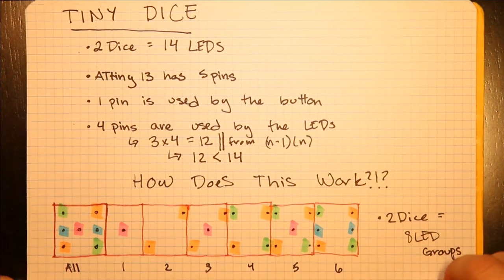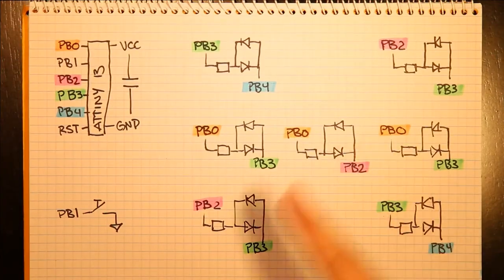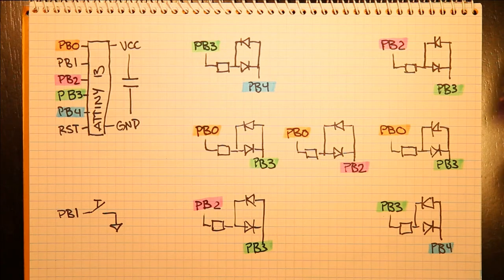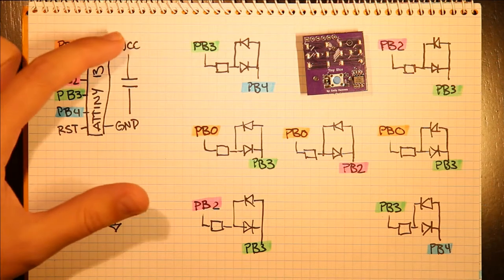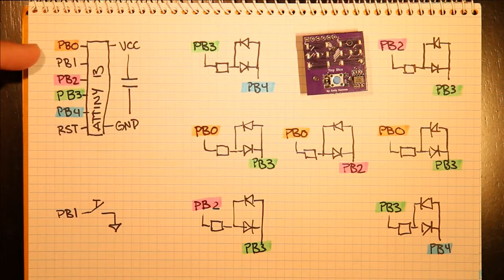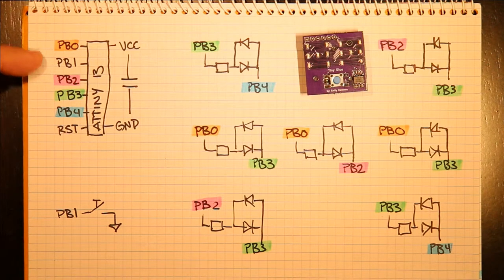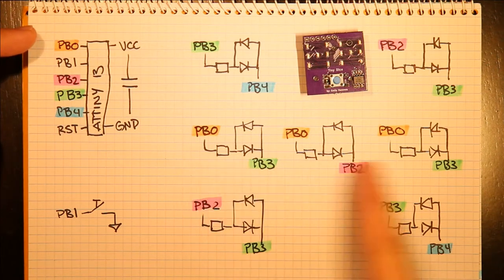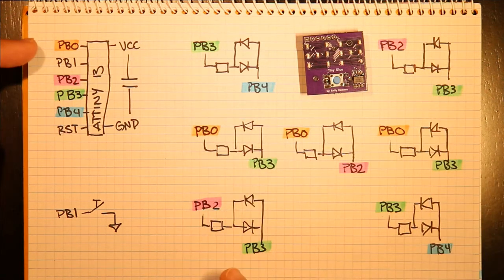In the schematic, it looks like this. This is the ATtiny, this is the high voltage, this is low voltage or VCC and ground. This is the button which I attached to pin B1, and then these are the combinations of each of these pins that I used.